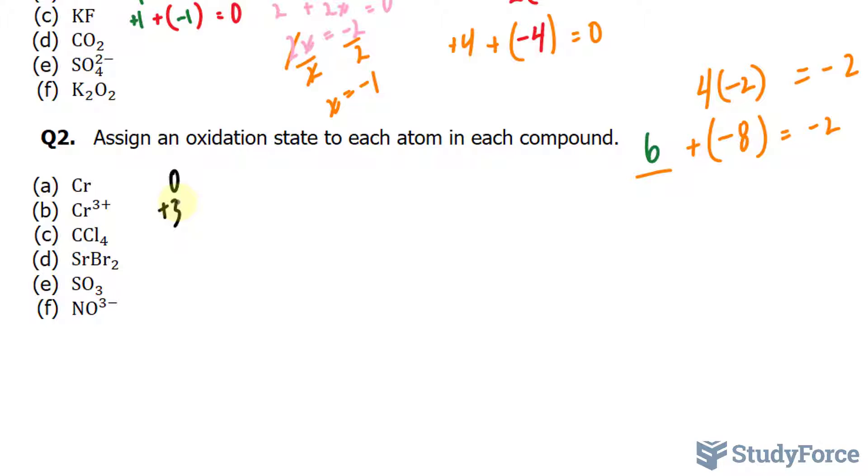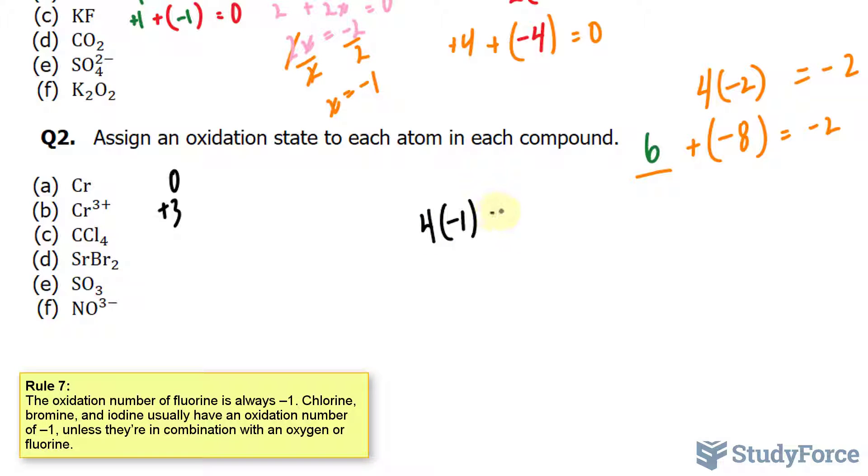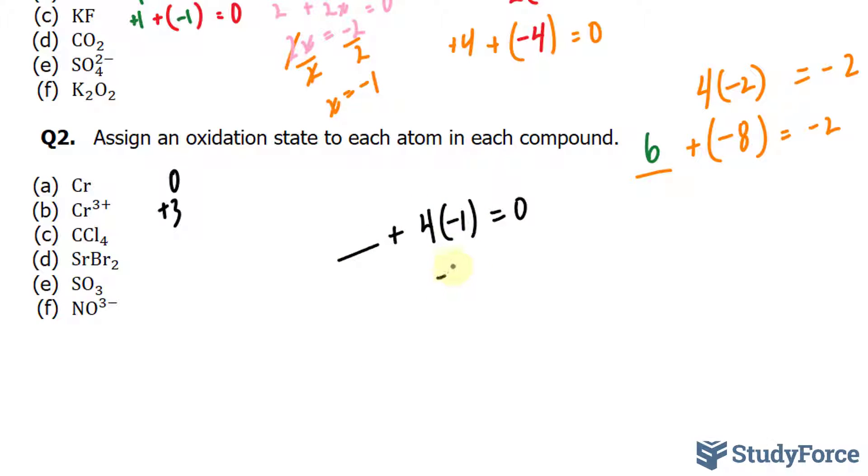Now on to question C. We have carbon tetrachloride. Here, chlorine has a charge of 1-, and there are 4 chlorine atoms. Given that this compound is neutral, it is equal to 0, so we have to deduce what carbon will be. 4 times minus 1 is minus 4, is equal to 0. Therefore, in order for this to be 0, the oxidation state of carbon has to be positive 4. Therefore, the oxidation state of carbon is positive 4, and the oxidation state of chlorine is minus 1.